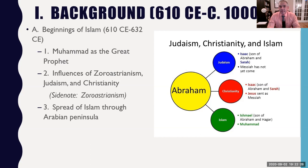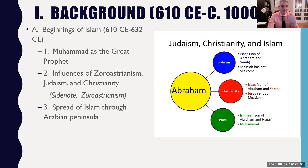For Islam, Abraham was also father to a boy named Ishmael, in addition to Isaac. In Judaism and Christianity, Abraham's heir is Isaac. But within Islam, Abraham's heir is Ishmael. The blessings that God gives to Abraham pass on through Ishmael and his descendants. This becomes a justification for Islam being the true revelation of God.